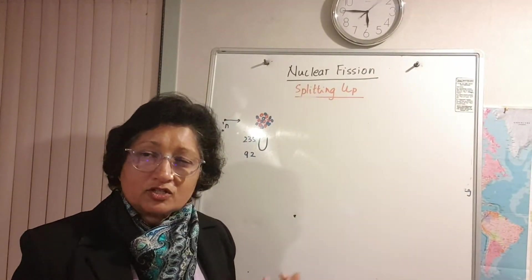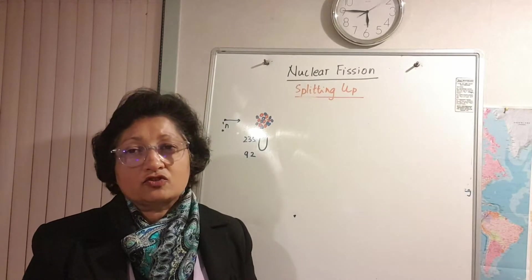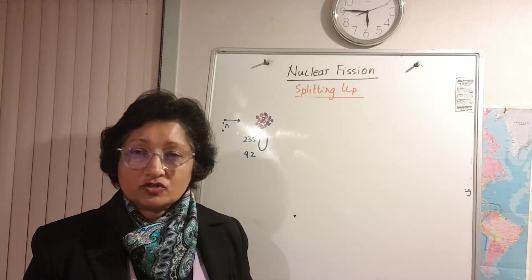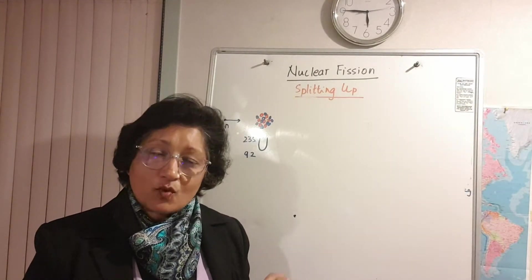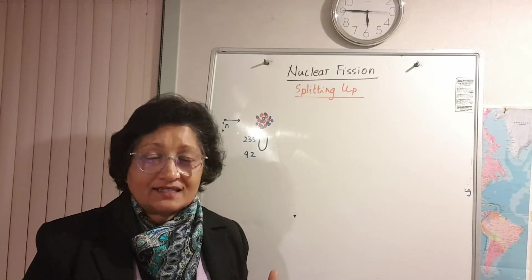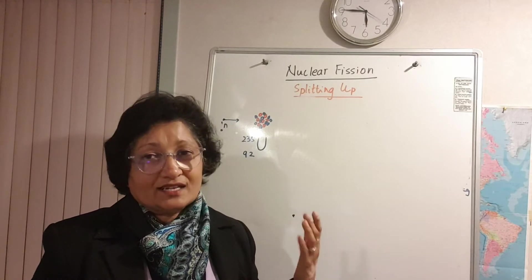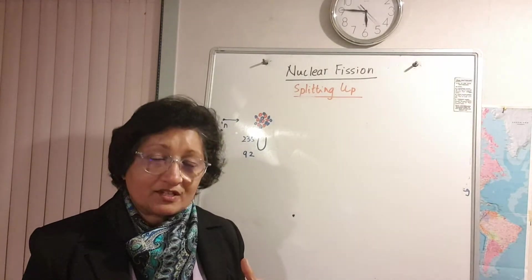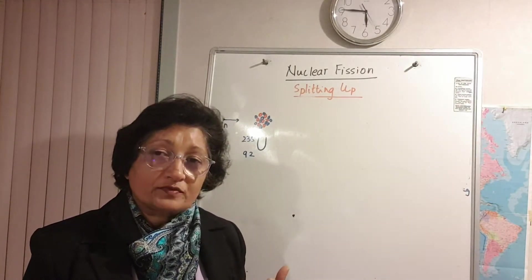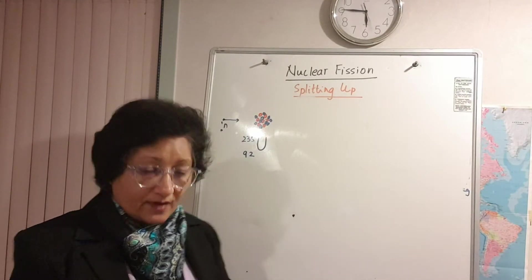Now notice I've used the word slow-moving. Slow-moving neutrons are also called thermal neutrons and the reason why it has to be slow moving is if it was moving fast it could go right through the nucleus and you wouldn't get nuclear fission. So it has to be slow moving so that it can be absorbed by the nucleus of the uranium atom.